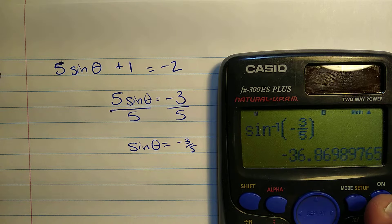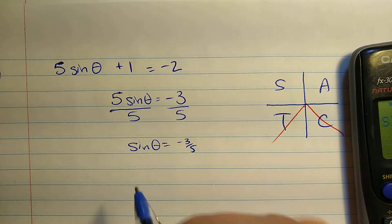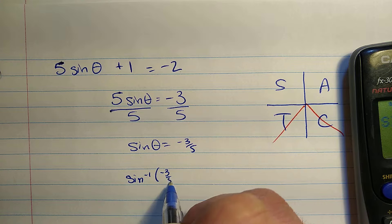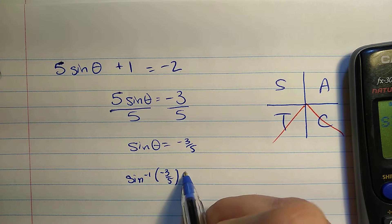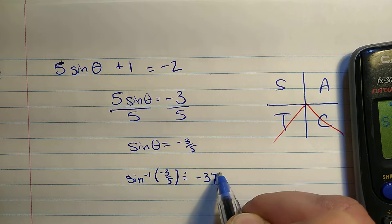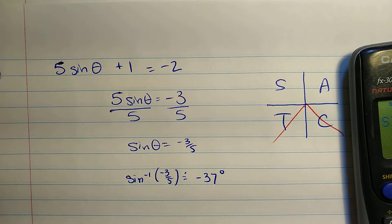In fact, a negative number. Let me write this down just like I see it on my calculator. Sine inverse of negative three-fifths is about negative 37 degrees. We'll round off.